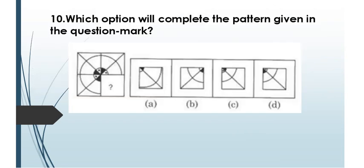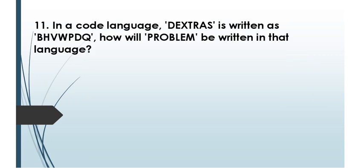Question nine is a figure completion pattern. Looking at the pattern: shaded parts and dots alternate in the sections — dot, full, dot, full. The missing section needs a dot first, then full. The answer is option C.